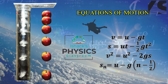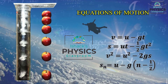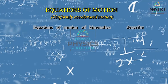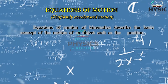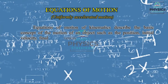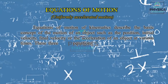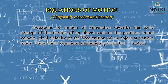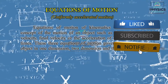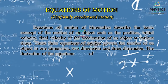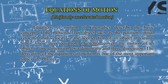The equations of motion are only applicable for uniform accelerated motion. Equations of motion of kinematics describe the basic concept of the motion of an object, such as position, initial velocity, final velocity, or the acceleration of an object at various times. These three equations of motion govern the motion of an object in one dimension, two dimensions, and three dimensions. The derivation of the equations of motion is one of the most important topics in physics.